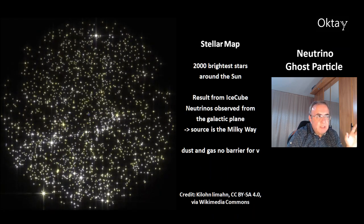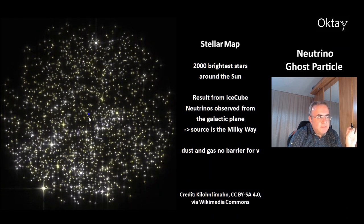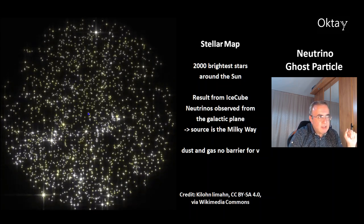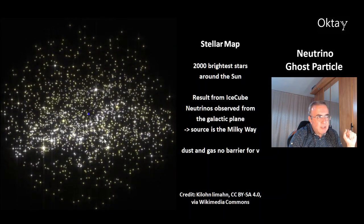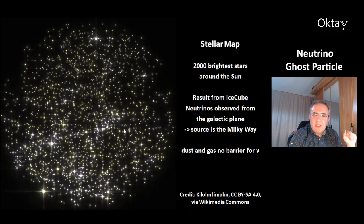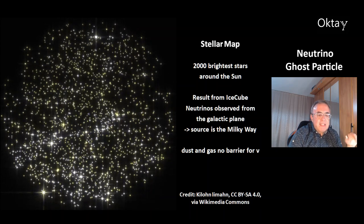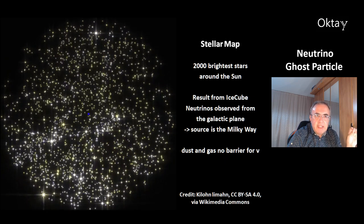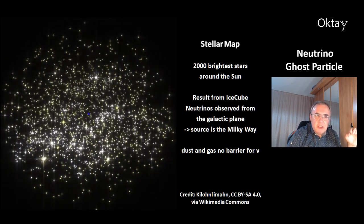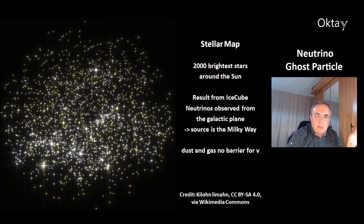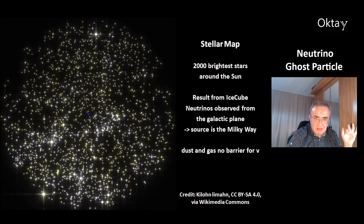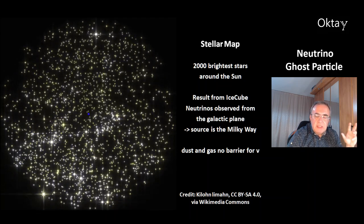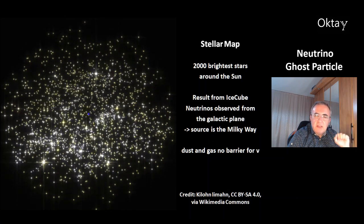This is a nice stellar map. In the middle, in the blue dot here, is the sun. These are the 2,000 brightest stars around the sun. You can see a higher number of stars in the middle in this plane. One result from IceCube was that the neutrinos observed from the galactic plane showed a higher concentration, meaning the source is in the Milky Way — these are not extragalactic neutrinos. And the dust and gas in the Milky Way is no barrier for neutrinos, which can pass right through it.